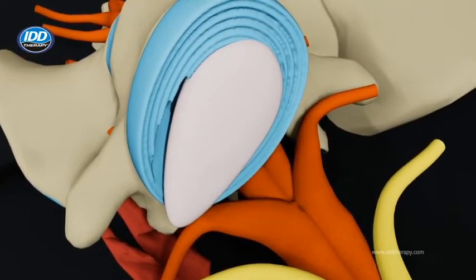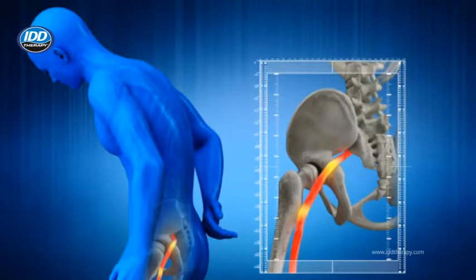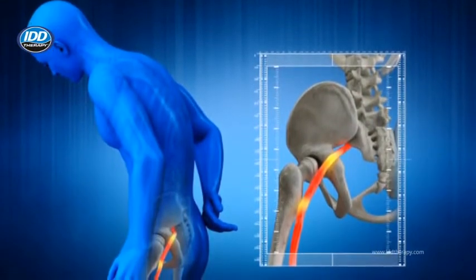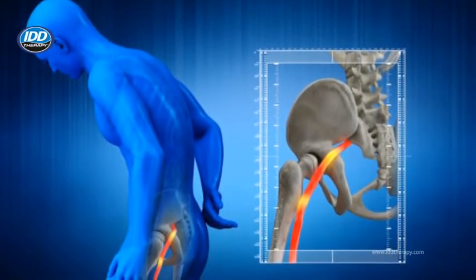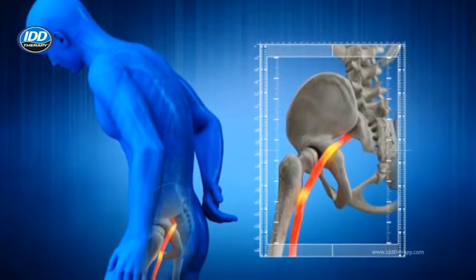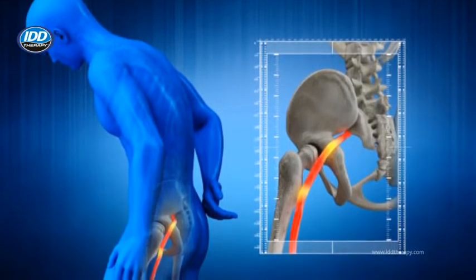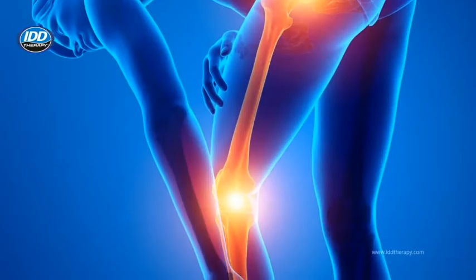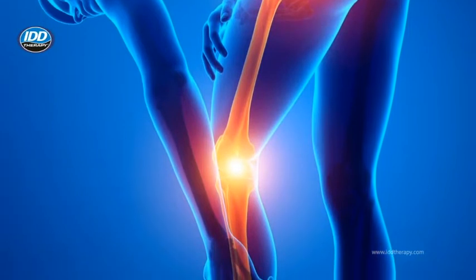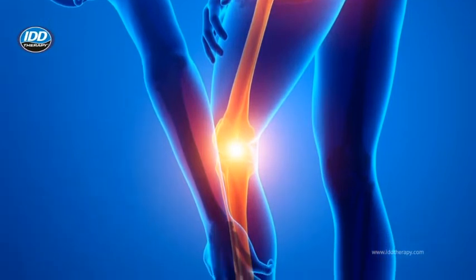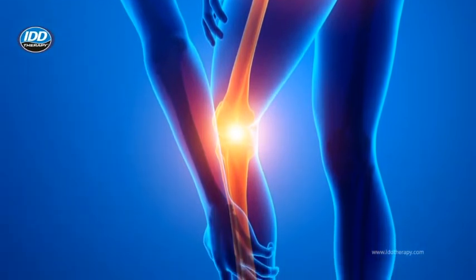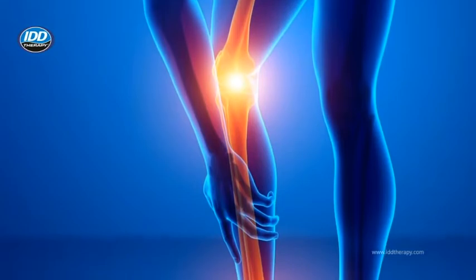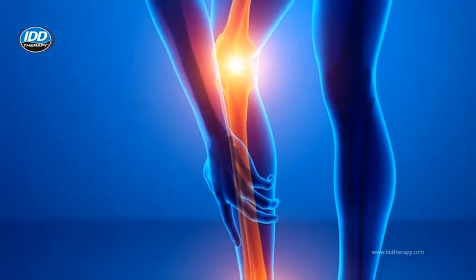A herniated disc will often irritate a nearby nerve and cause aching pain, weakness, and numbness that travels down the leg or arm. It may start as a sharp or burning shooting pain. Severe cases can cause you to stumble, have trouble lifting objects, or even struggle with bladder control.